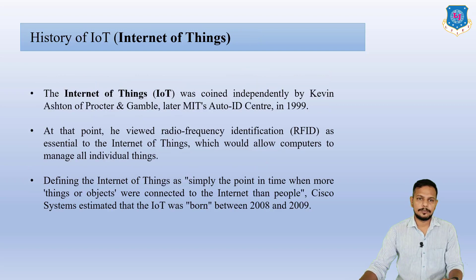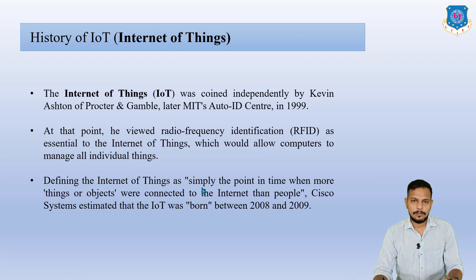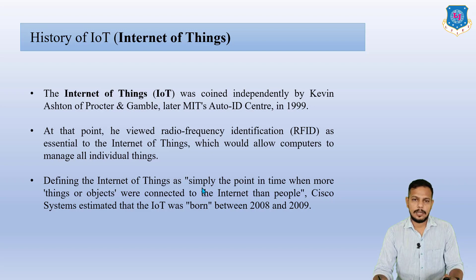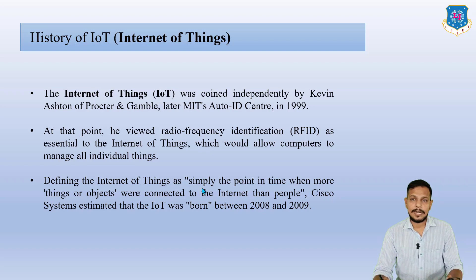Now let us look at the history of IoT. The term Internet of Things was coined independently by Kevin Ashton of Procter and Gamble, later at MIT's Auto-ID Center in 1999. At that point he viewed Radio Frequency Identification (RFID) as essential to the Internet of Things, which would allow computers to manage all individual things. RFID is used nowadays at toll gates as an example of IoT — it allows you to access the toll gate and pass through.